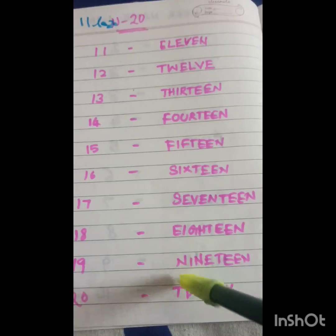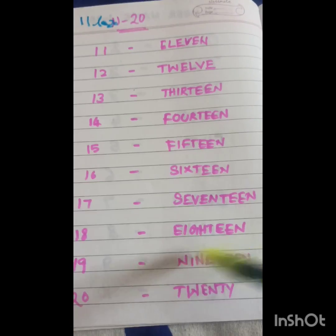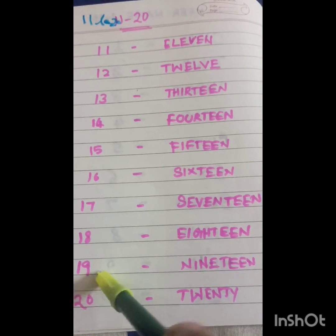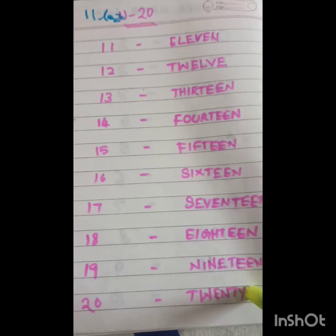19 — N-I-N-E-T-E-E-N — 19. And then 20 — T-W-E-N-T-Y.